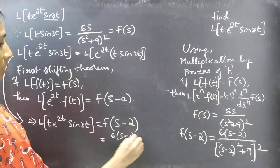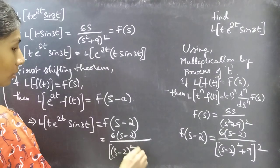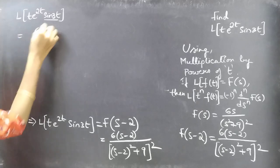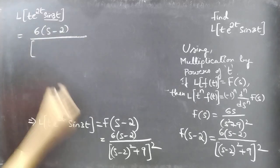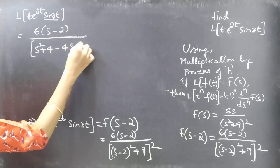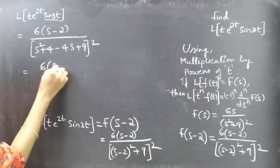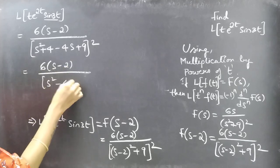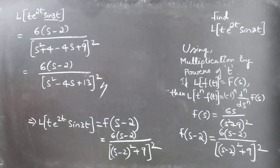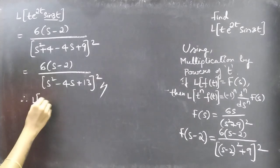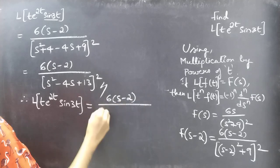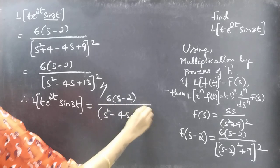Expanding (s - 2)²: we get s² - 4s + 4. Adding 9 gives s² - 4s + 13. Therefore, L{t·e^(2t)·sin(3t)} = 6(s - 2) / (s² - 4s + 13)².